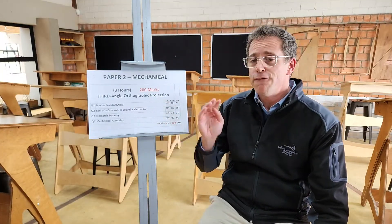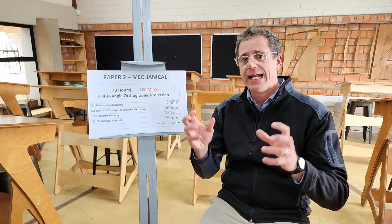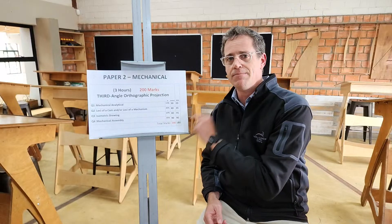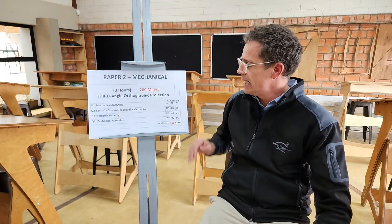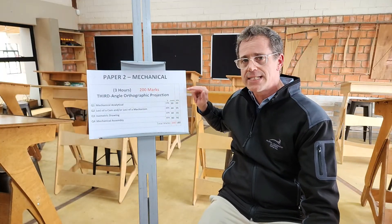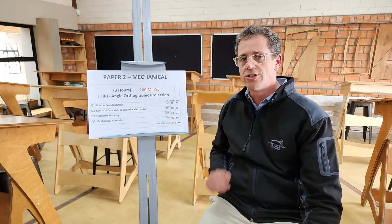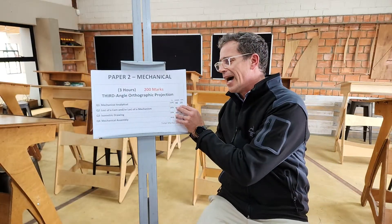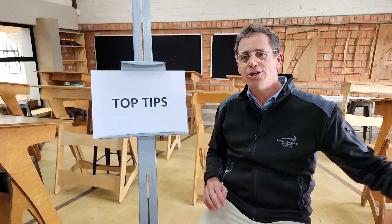The fourth question is guaranteed to be a mechanical assembly in third angle orthographic projection, and it's going to be complex — 90 marks. Do not make the mistake of thinking you can leave the mechanical assembly and focus on others, because if you struggle here you're in serious trouble. That assembly is 50% of your paper.